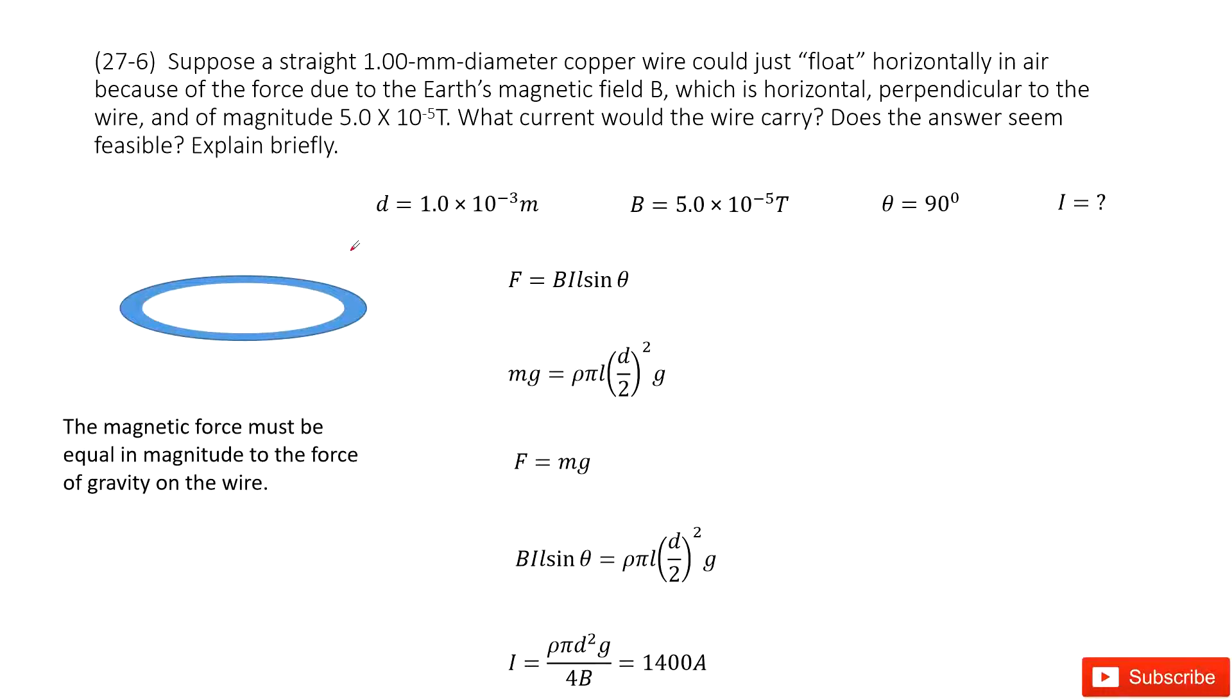Let's look at problem 6 in chapter 27. Chapter 27 is about magnetism. So we have a copper wire that can just float horizontally in the air.